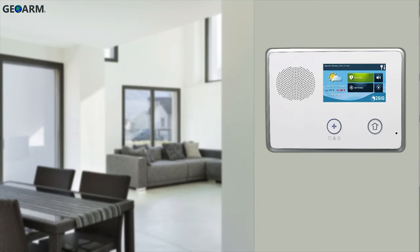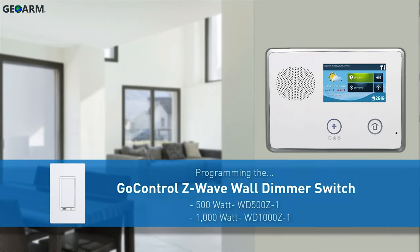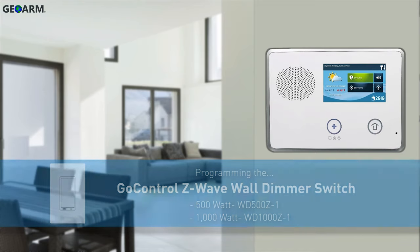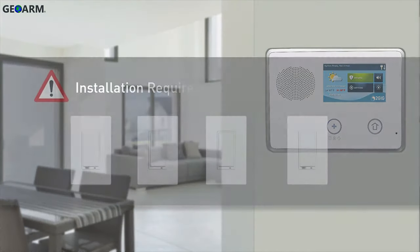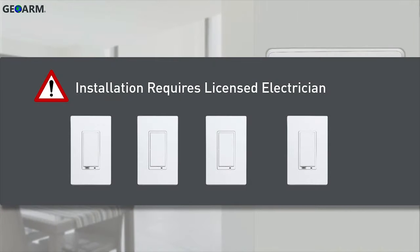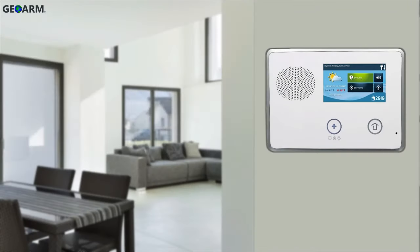Welcome! The following video will demonstrate how to program a GoControl Z-Wave wall dimmer switch into a GC2 security panel. All lighting products must be installed by a licensed electrician. Once installation is complete, you can begin programming.